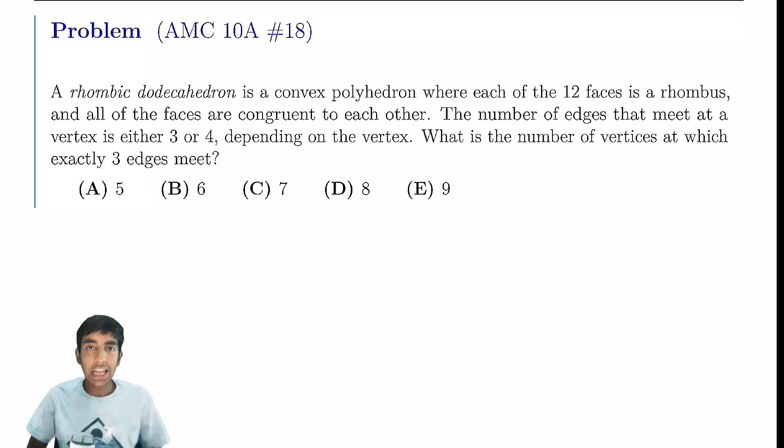A rhombic dodecahedron is a convex polyhedron where each of the 12 faces is a rhombus and all the faces are congruent to one another. The number of edges that meet at a vertex is either 3 or 4. How many vertices exist such that exactly 3 edges meet?